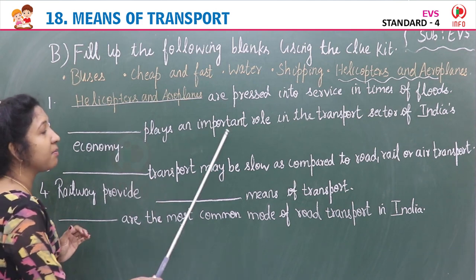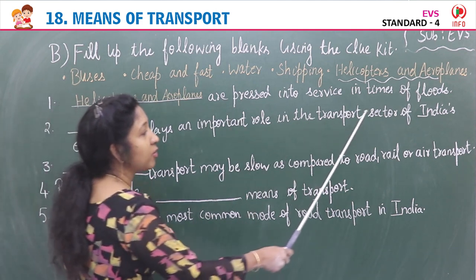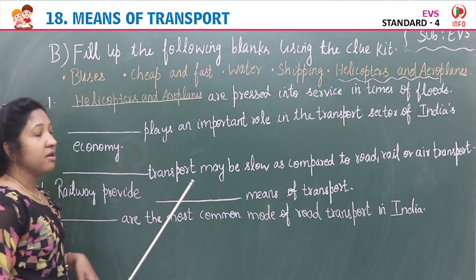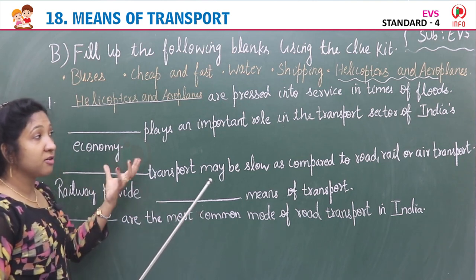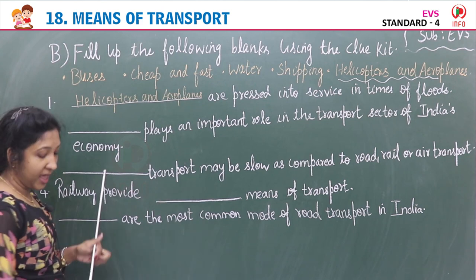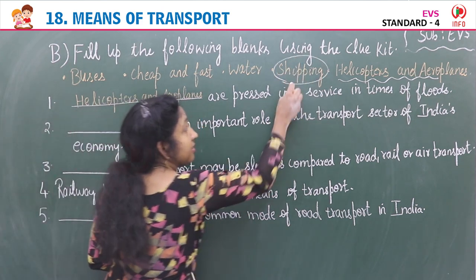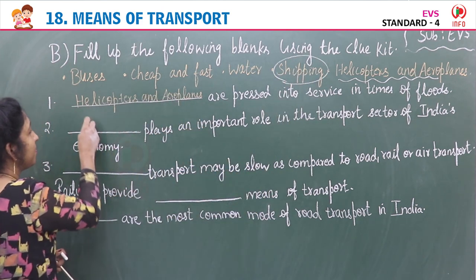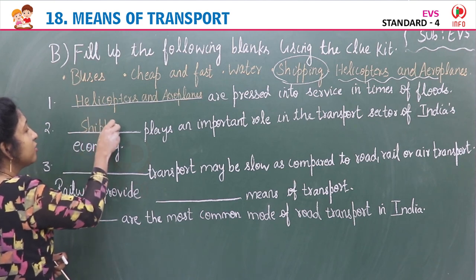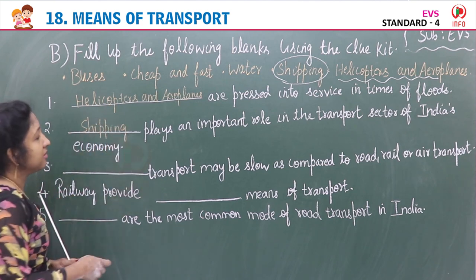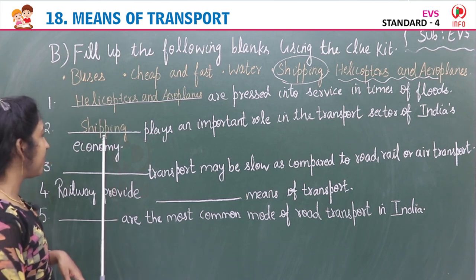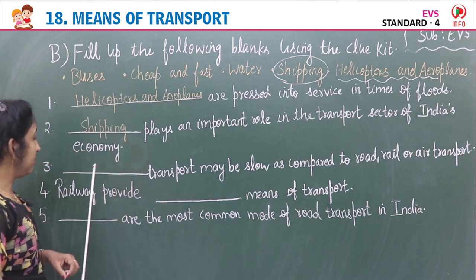Blank two: Dash plays an important role in the transport sector of India's economy. The answer is shipping. Shipping plays a very important role in transporting goods in India's economy. Blank three: Dash transport may be slow as compared to road, rail, or air transport. The answer is water. Water transport is very slow compared to road, rail, and air.